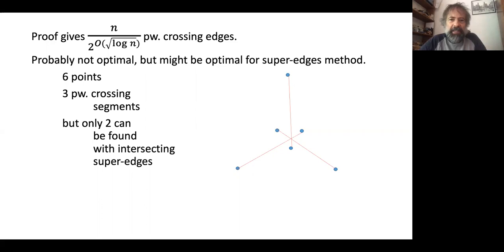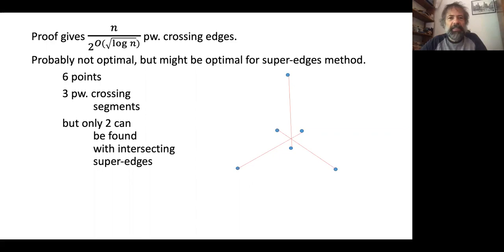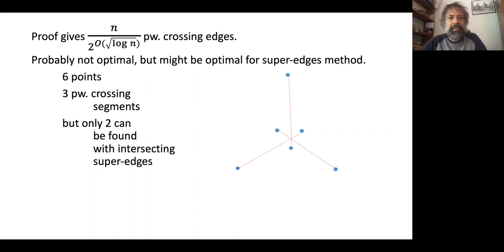For example, six points may determine three pairwise crossing edges, but you cannot find three pairwise crossing super edges among them using this method — only two. So the additional structure is a restriction and the bound of n / 2^(O(√log n)) might be optimal for this technique specifically, though not necessarily for the original problem.